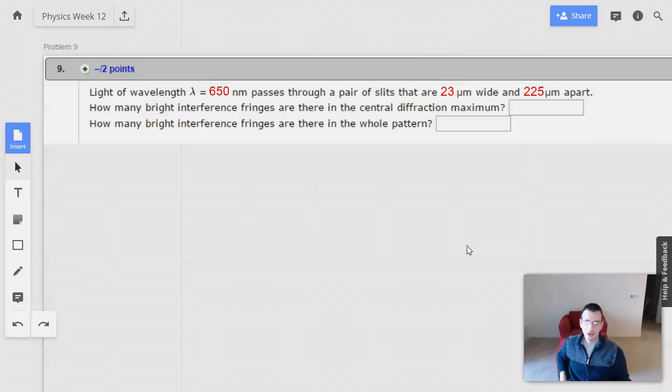Week 12, problem 9. Light of wavelength 650 nanometers passes through a pair of slits that are 23 micrometers wide and 225 micrometers apart. How many bright interference fringes are there in the central diffraction maximum?